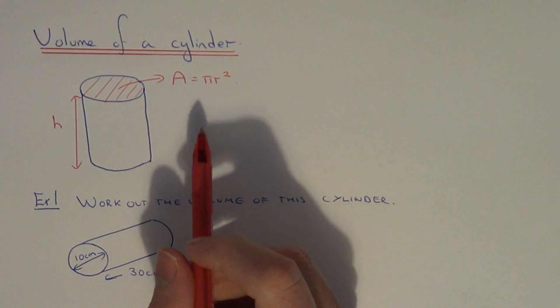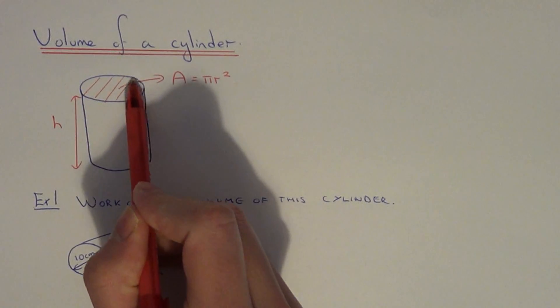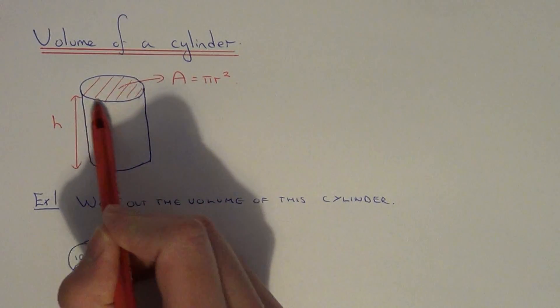To work out the volume of a cylinder, first of all you have to find the area of the end of the cylinder. This is in the shape of a circle.